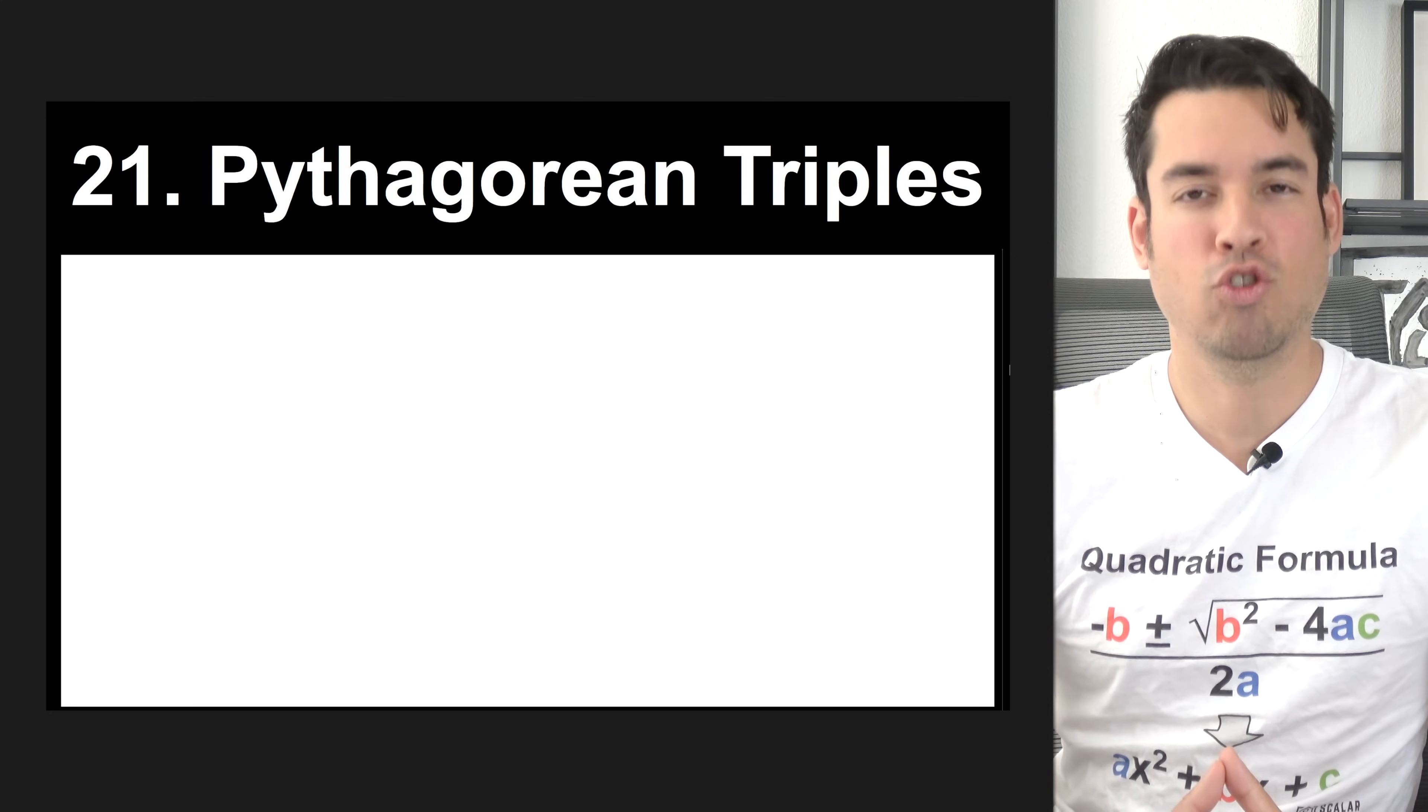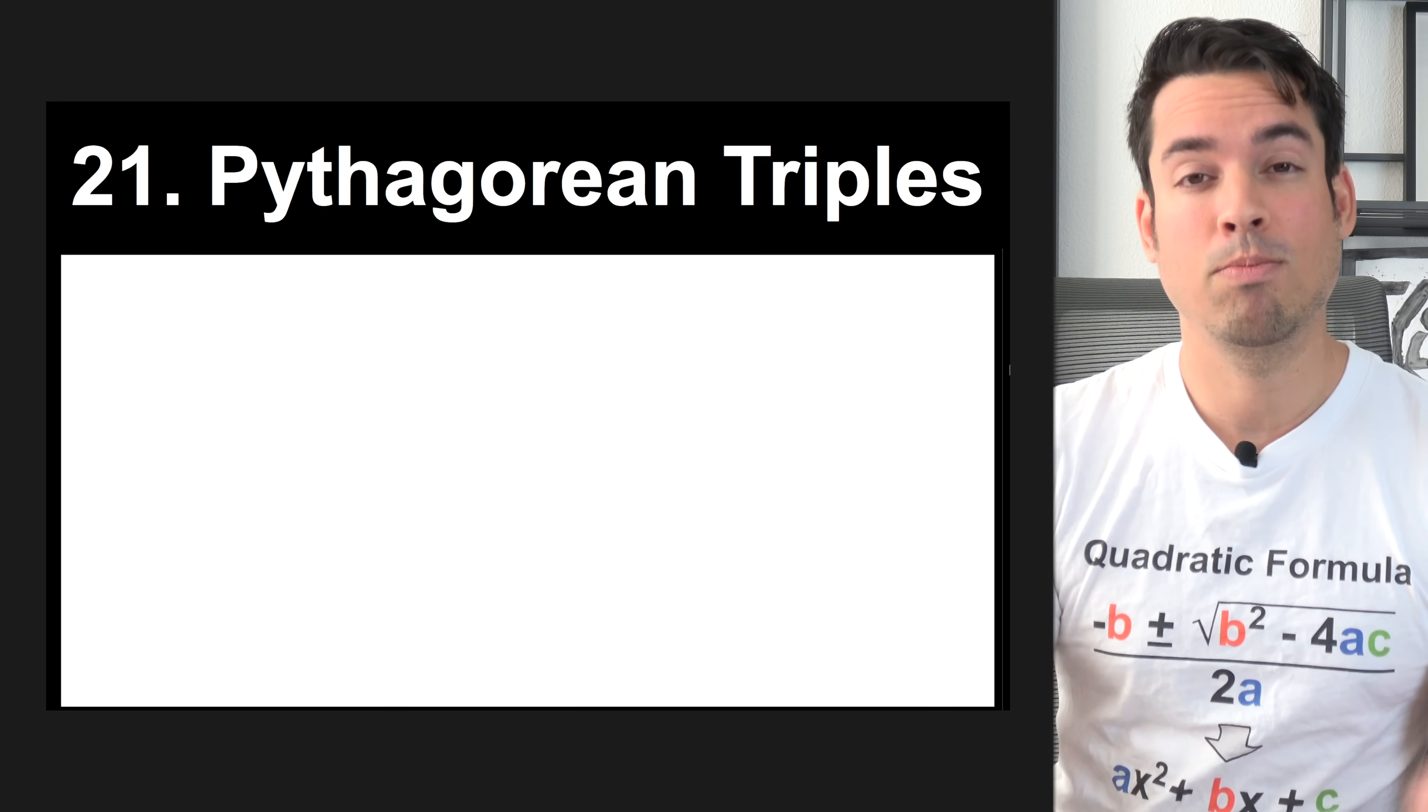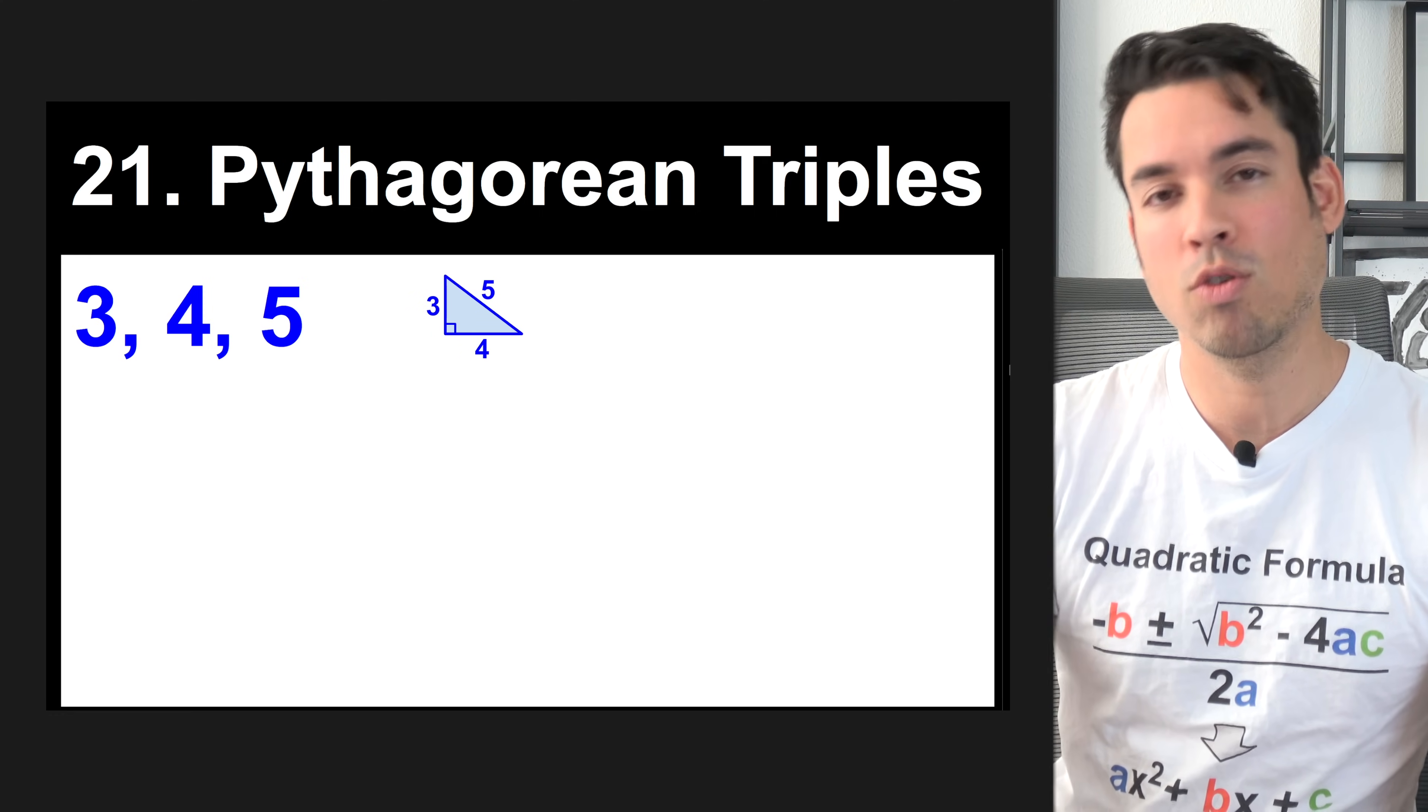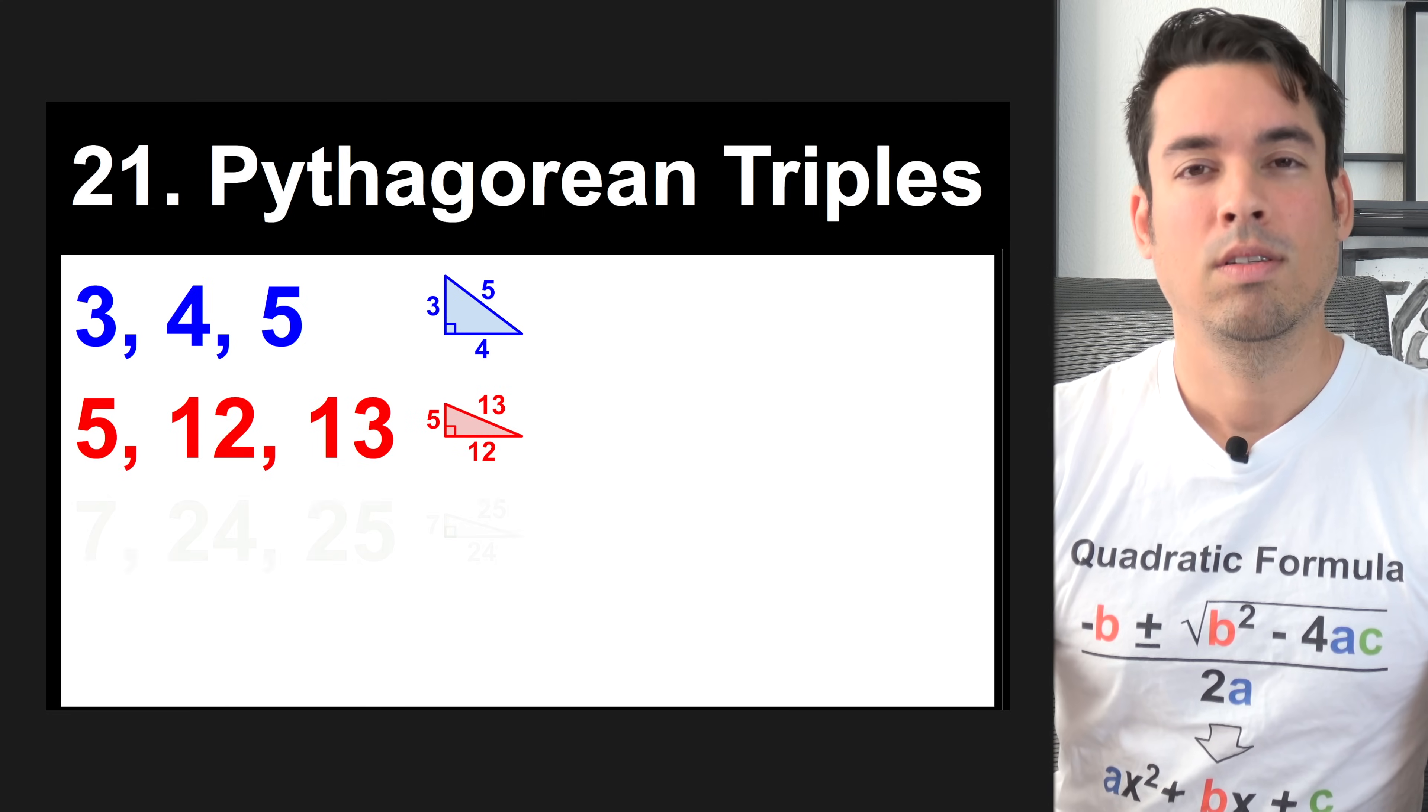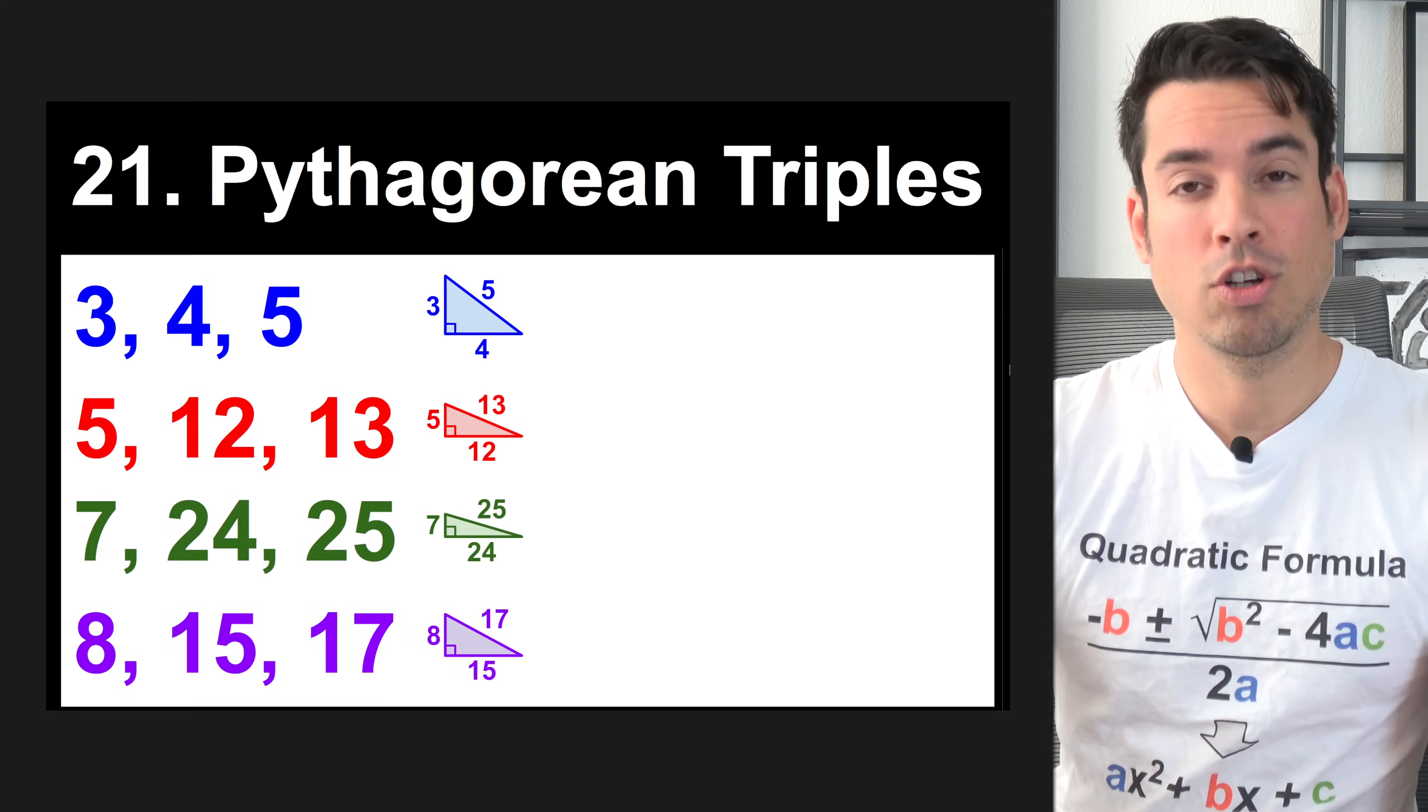Next, we have Pythagorean triples. These are so helpful because they always use these on the SAT. If you spot them, it'll save you some time from using Pythagorean's theorem. The most famous one is 3, 4, 5. There's an example of a 3, 4, 5 right triangle where 5 is the hypotenuse. We also have 5, 12, 13, 7, 24, 25, and 8, 15, 17. These are the most common ones that usually show up on the SAT.